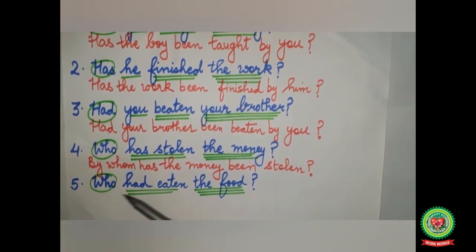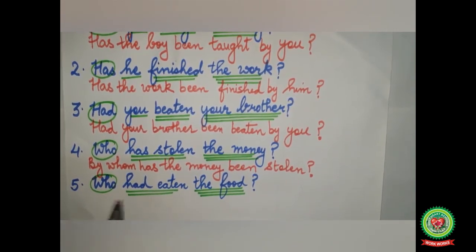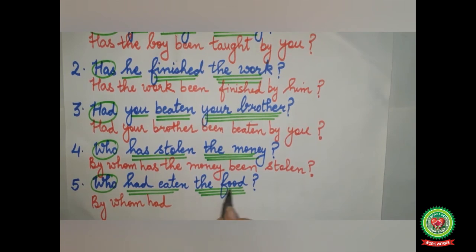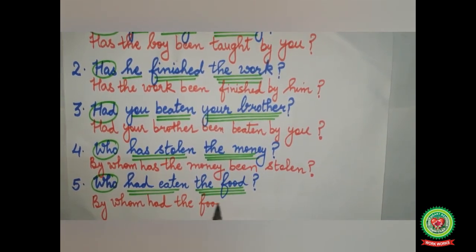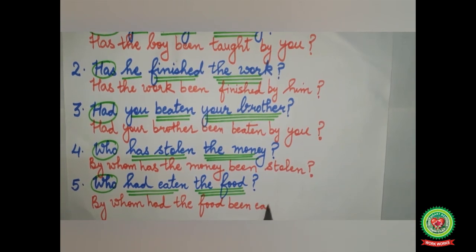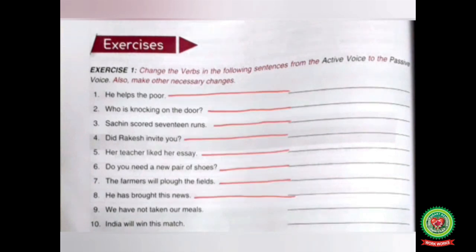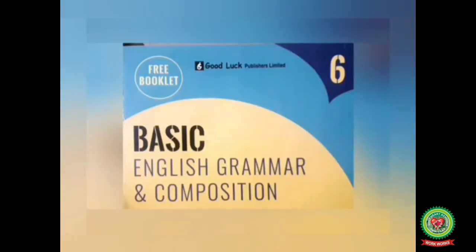The last sentence: 'Who had eaten the food?' In the same way, 'who' is the question word, there is no subject, 'had eaten' is the verb, and 'the food' is the object. 'Who' will change to 'by whom'. After 'by whom' we add the helping verb 'had'. The object 'the food' comes next, and we add 'been eaten' at the end. The answer becomes: 'By whom had the food been eaten?' Before solving the exercises in the book, draw lines neatly as given in the picture so that you can do your work neatly. I hope you all have understood the rules of active and passive voice. Now following these rules, do the related exercises of Chapter 17 — Active and Passive Voice — from your Basic English Grammar and Composition book. Thank you.